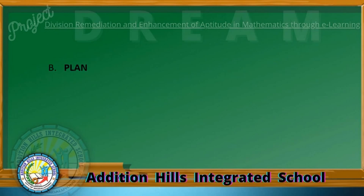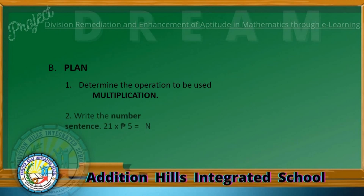Step B: Plan. Number 1, determine the operation to be used. In the problem, the operation is multiplication. Number 2, write the number sentence. The number sentence is: 21 times P5 equals N.